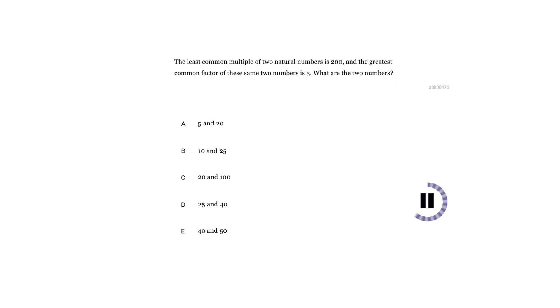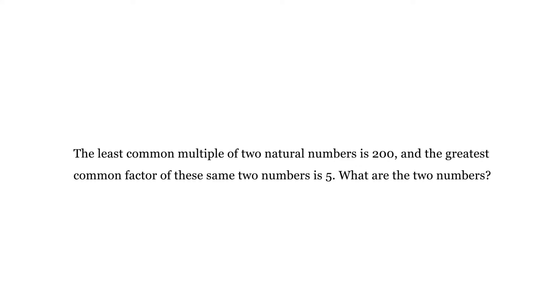Press pause and answer the question. All right, we're given that the least common multiple is 200 and we're given that the greatest common factor of the same two numbers is 5 and we're trying to figure out what are the two numbers.